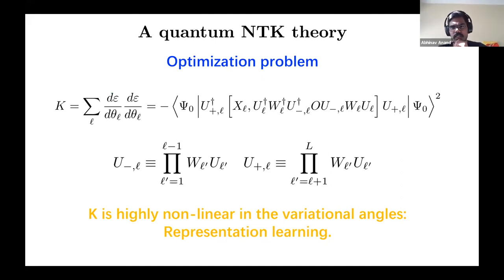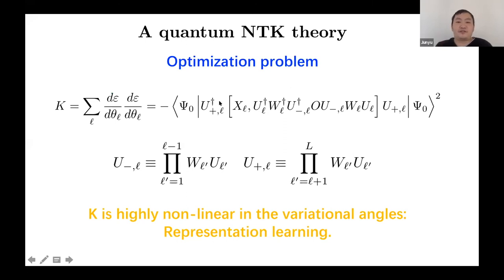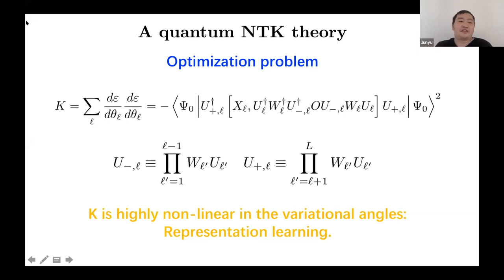Follow-up: So this basically reduces to a fixed quantity in some sense? It is a number, but this number is changing during gradient descent dynamics, because U-dagger and U depend on the variational angles theta. So during gradient descent the kernel itself is running — this is what we mean by feature learning. Usually in the kernel method the kernel is fixed, but right now the kernel is running. We are investigating cases where this is approximately a constant, and in that case we can analytically solve the problem. Beyond this limit we use perturbation theory.